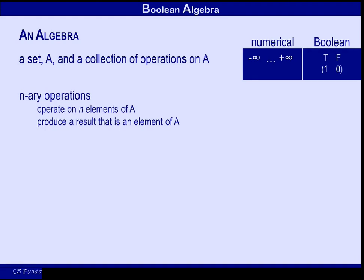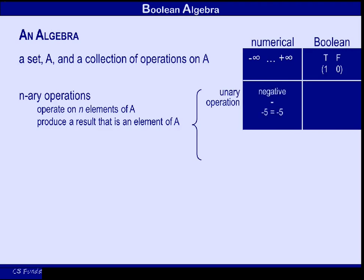In addition to the set of values that the algebra can manipulate, there is a collection of operations that can be performed on the members of the set A. We categorize those operations according to how many items from the set A they operate on — in general an n-ary operator operates on n members of the set A. If n is 1, then we talk about unary operations. Numerical algebra also has a unary operator: the minus sign that operates on a value, here the number 5, to produce another value, negative 5.